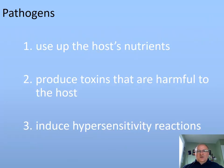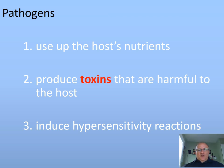Regardless of whether the organism stays close to its portal of entry or migrates throughout the body via invasins, its overall goal is to find a suitable environment with plenty of nutrients, the right temperature, pH, and oxygen so that it can grow. While it grows and multiplies, it uses up the host's nutrients, metabolizes, and secretes metabolic waste. Likewise, pathogens can produce toxins that are harmful to the host. We know of about 200 toxins — they are specific, usually protein in nature, though there is also a group of toxins that are lipopolysaccharide in nature. We'll talk more about toxins in another video.